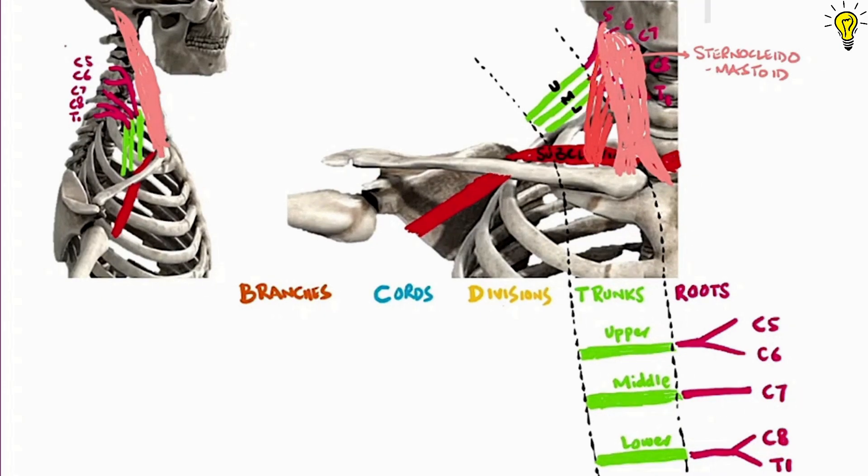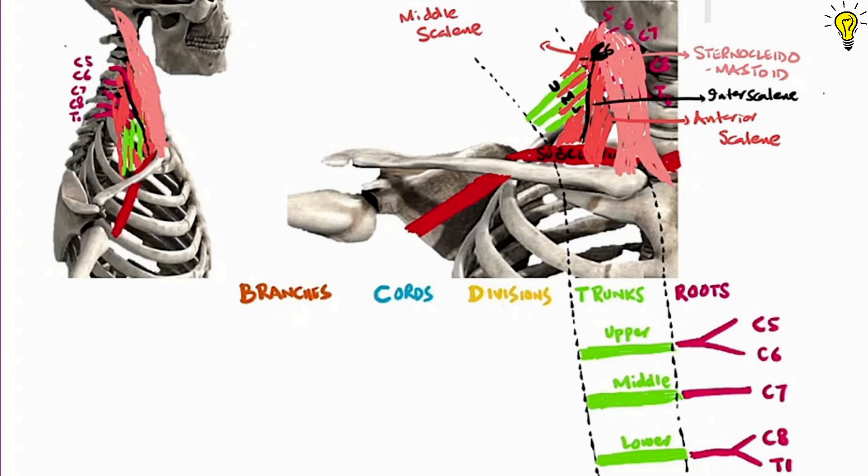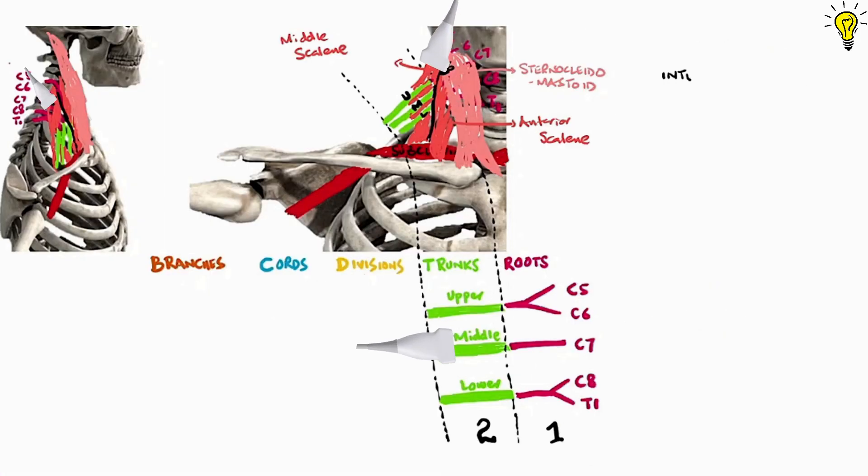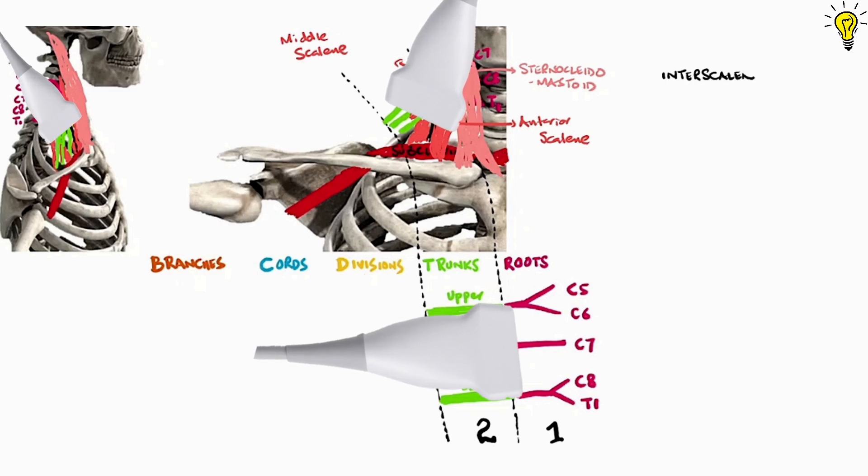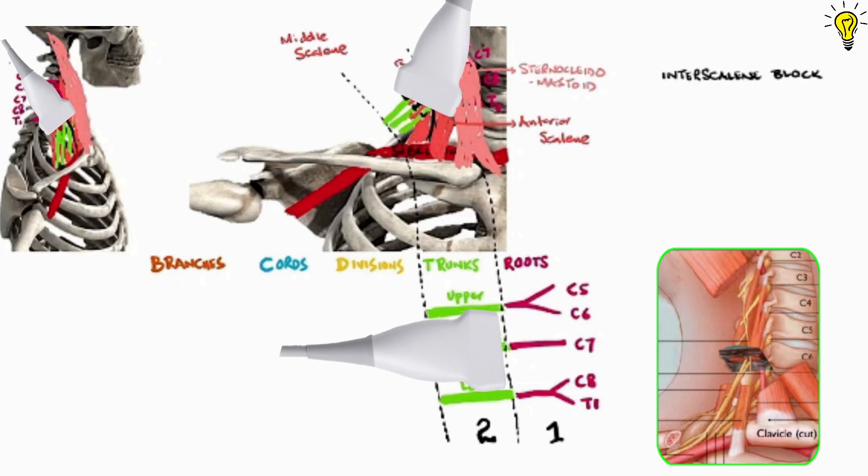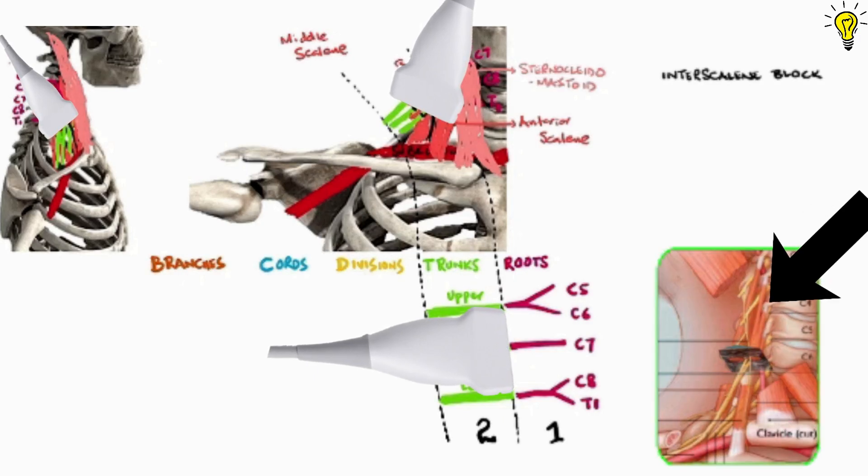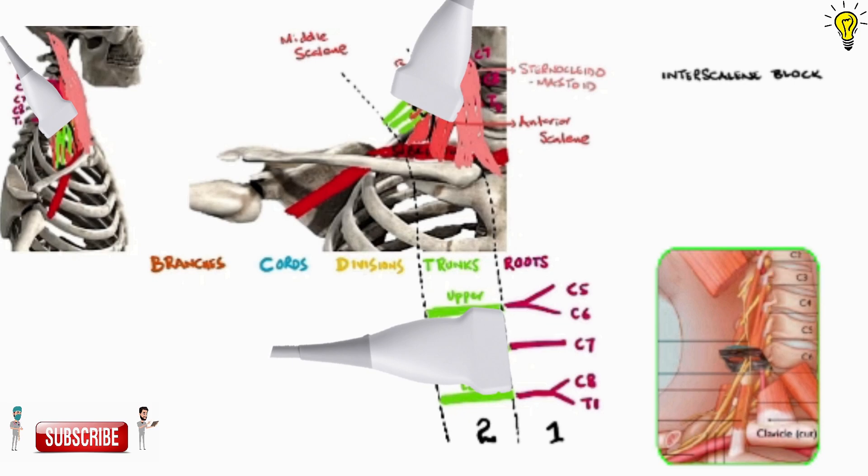Below and lateral to sternocleidomastoid lies the anterior scalene muscle and middle scalene muscle. Now the trunks emerge through these two scalene muscles at interscalene groove at C6 level. We will discuss landmarks in detail in specific block lectures. But point being, this is where you place the transducer to see the trunks. In right lower diagram, you can see the grey ultrasound rays dissecting through the trunks at interscalene groove and C6 or cricoid cartilage level.